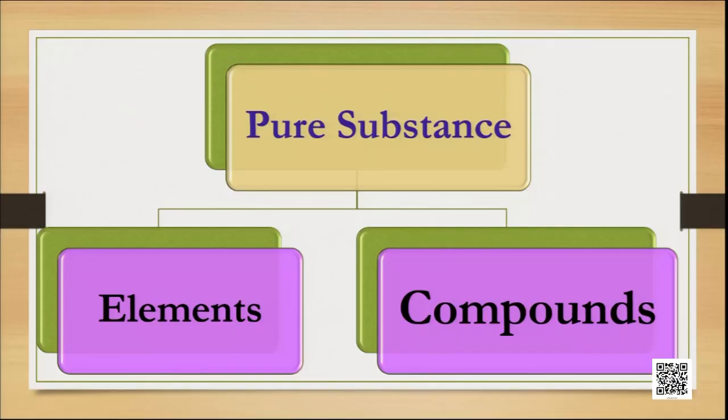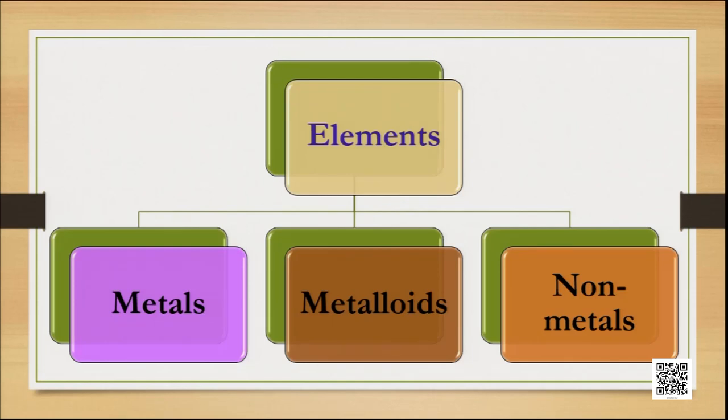The activities were very interesting and I think you understood what is physical change and what is chemical change. At the beginning of this chapter we discussed that substances are classified into two types: pure substances and mixtures. We have already discussed about mixtures and their properties. Now we are going to discuss pure substances. Pure substances are classified into two types: elements and compounds. There are 118 elements in nature, and elements are classified into three types: metals, metalloids, and non-metals.